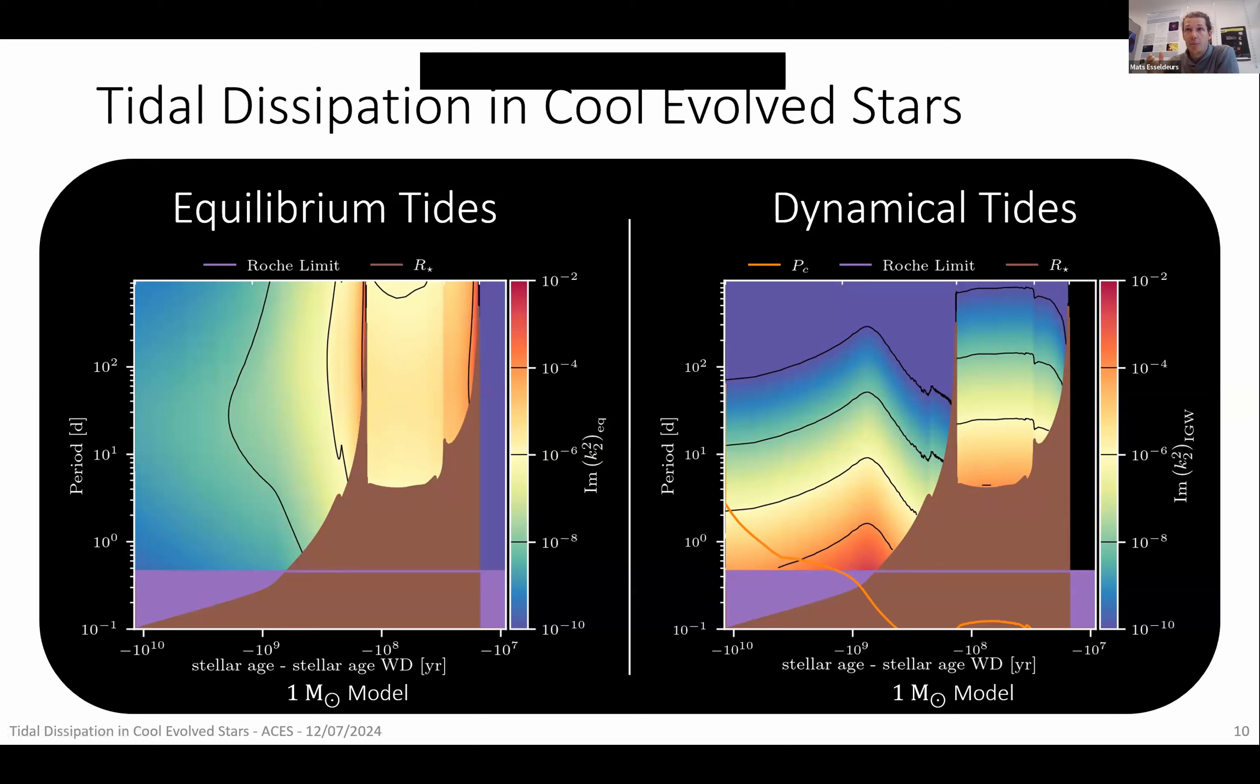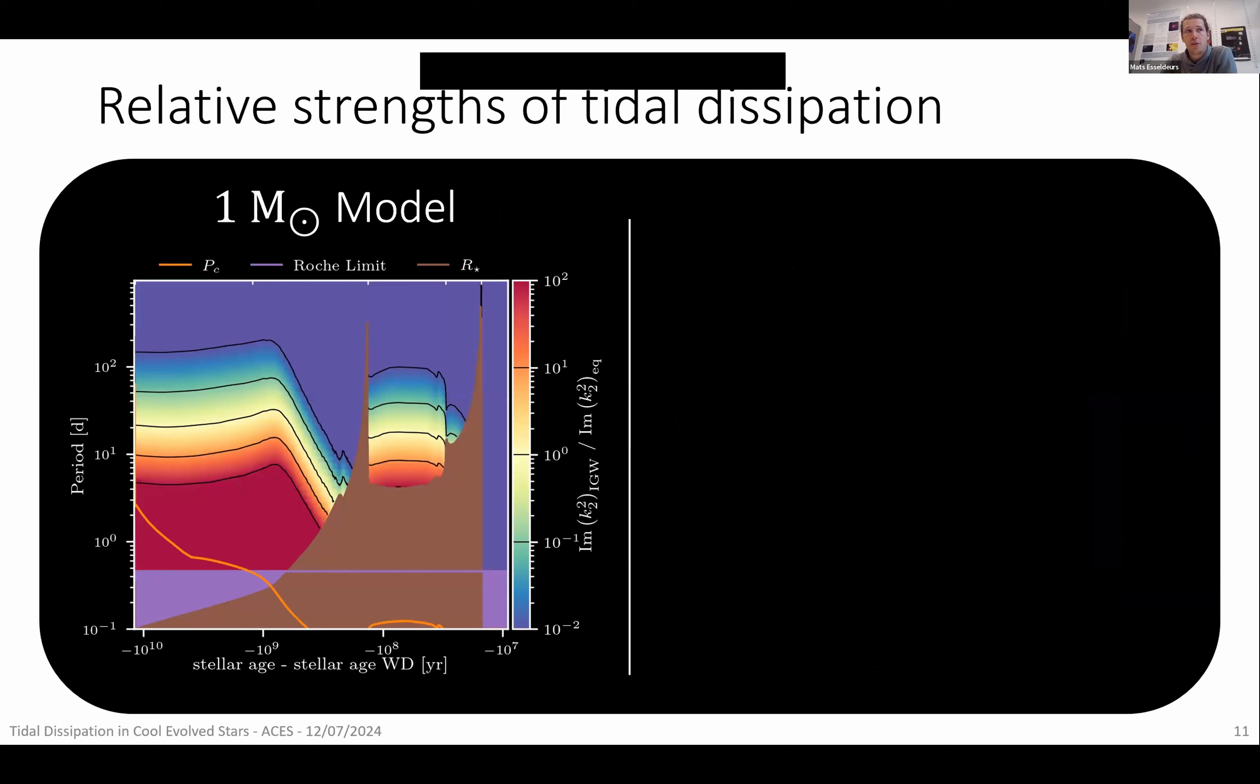So now that we have the equilibrium and the dynamical tide, this dynamical tide, I should note is a dynamical tide from gravity waves. Gravity waves are waves that can travel in the radiative zone of the stars, in the radiative core of the giant phases in this case. So now we have equilibrium and dynamical tides. We can divide the two and see in which part of the parameter space which type of tide is dominant. And then you get an image like here on the left. Where red indicates the dynamical tide being dominant and blue indicates the equilibrium tide being dominant. Where you can see that for low period companions during the main sequence, as well as the red giant branch, the dynamical tide is dominant and it still has some relevance during the horizontal branch. But when the star is giant in size during the RGB, the equilibrium tide dominates.